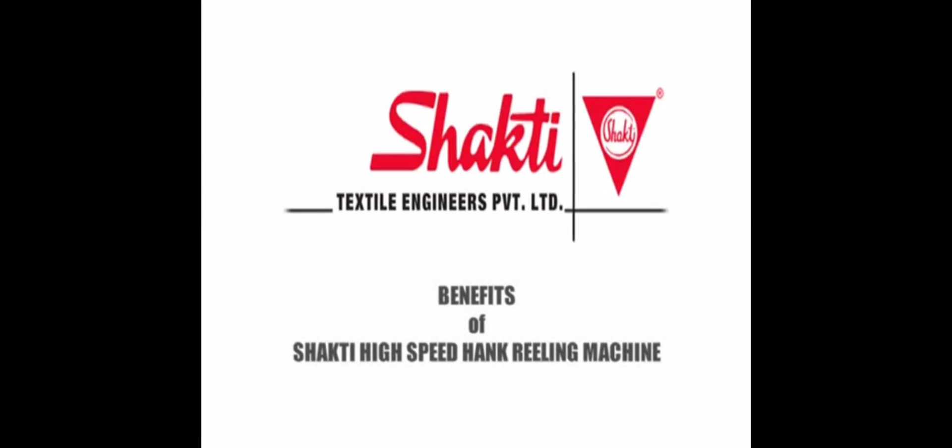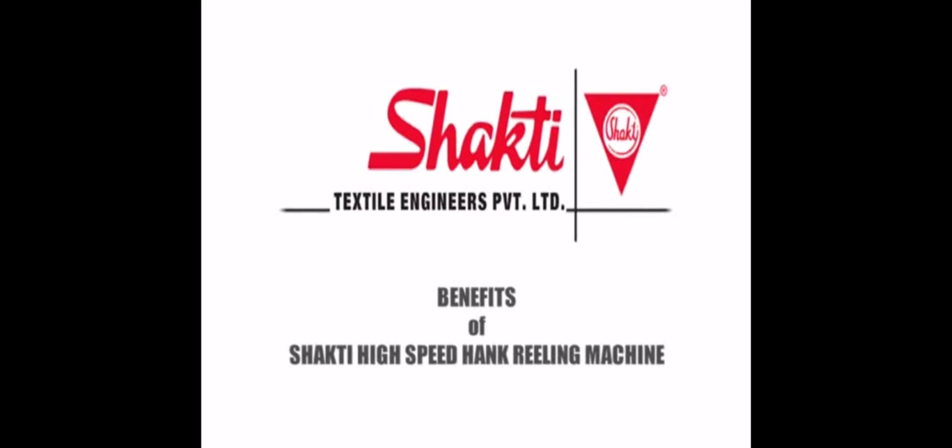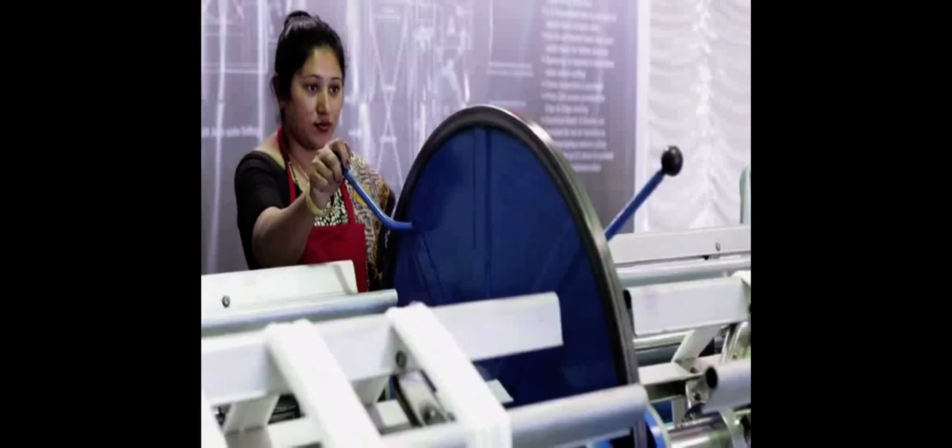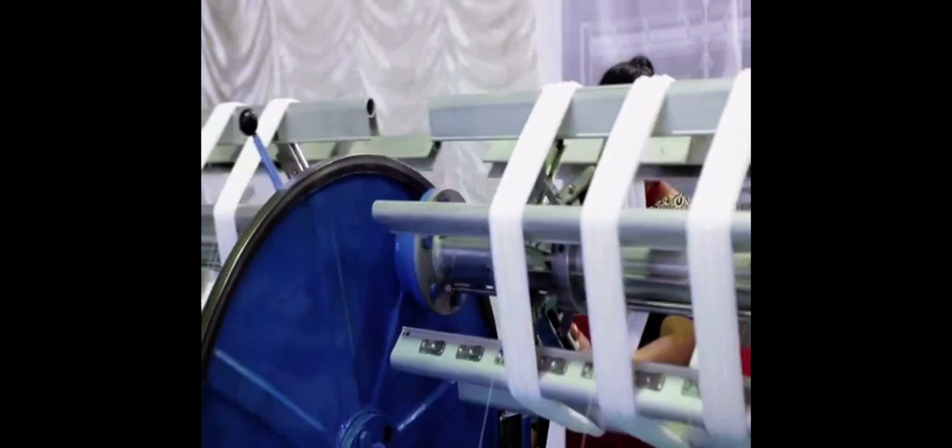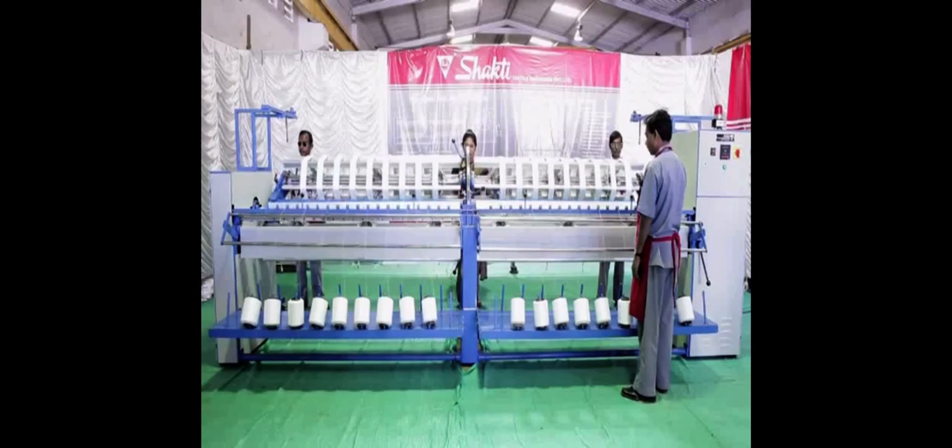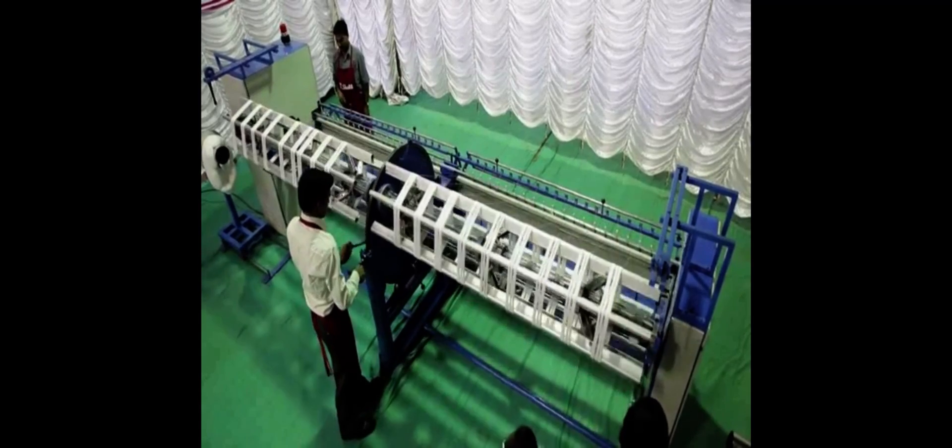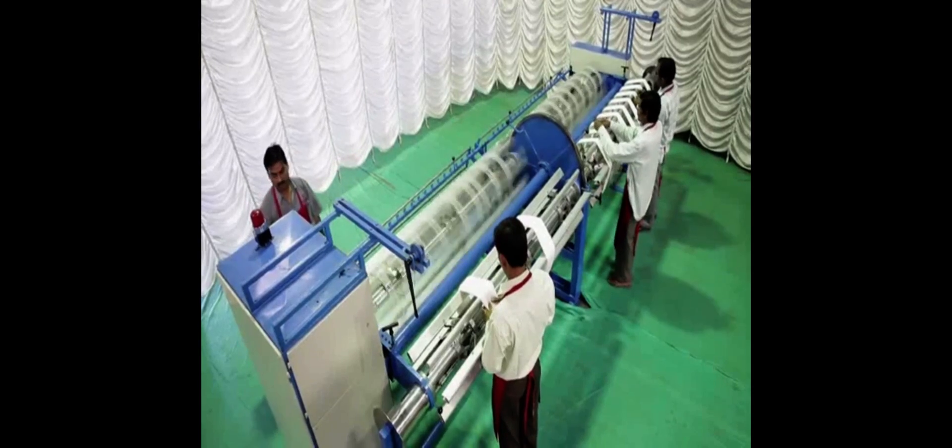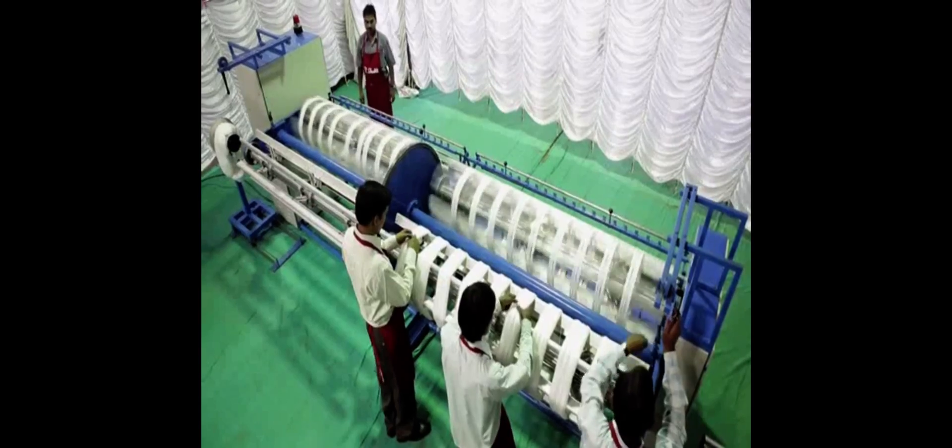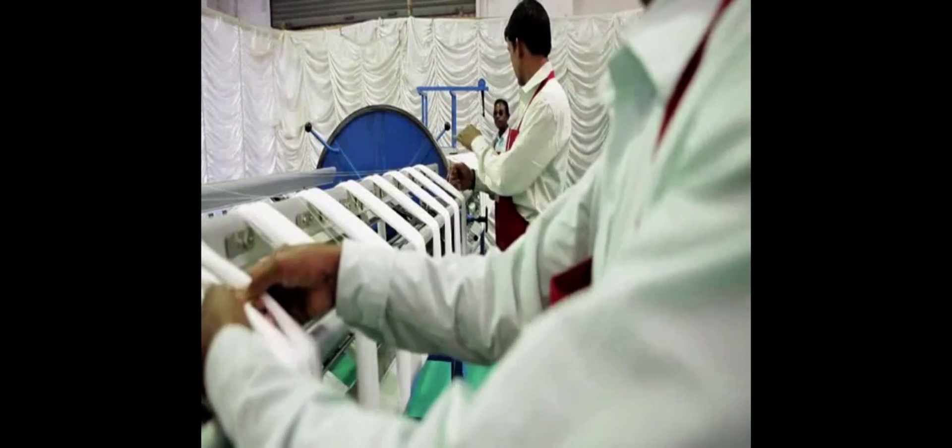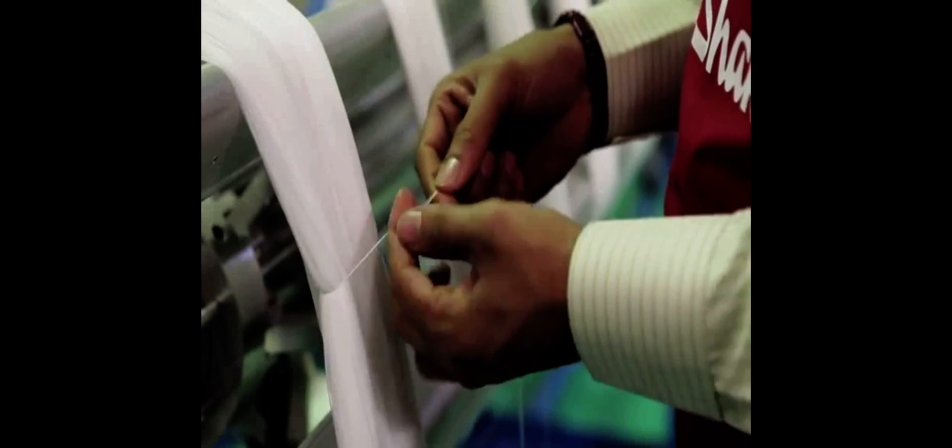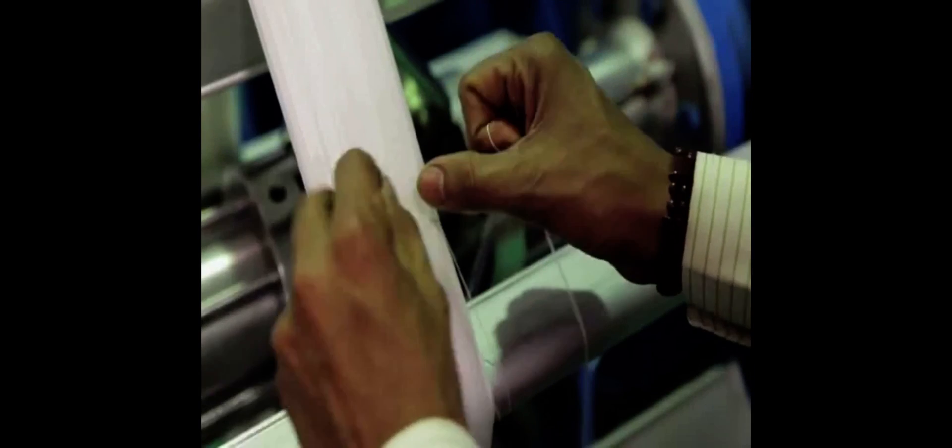Let us summarize the overall advantages of Shakti hank reeling machine. The Shakti hank reeling machine is so simple to handle that even ladies can operate it. Simultaneous winding and doffing by flipping of turntable increases the mechanical efficiency by nearly 50%. The overall efficiency of operations can be increased by up to 80% by employing adequate lacing workers.